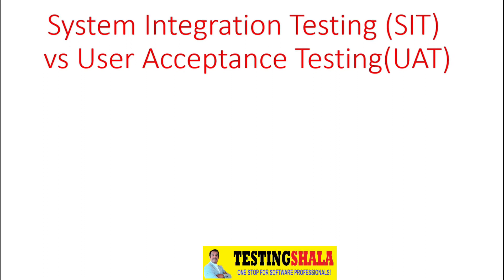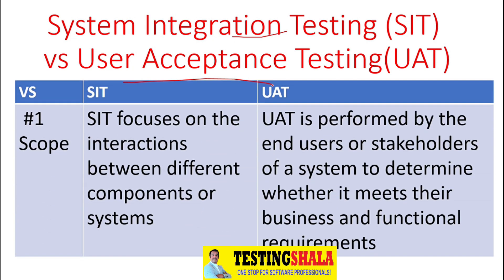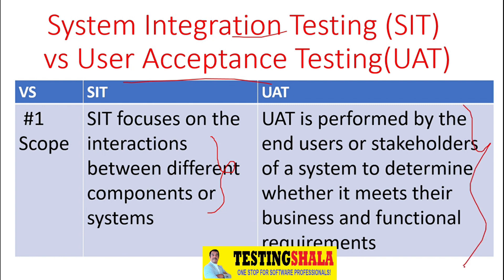Hi friends, welcome back. In this video we will learn about the key differences between System Integration Testing (SIT) and User Acceptance Testing (UAT). The most important difference is in terms of scope or objectives. SIT's main objective is to focus on the interaction between two different components or systems, whereas UAT is normally performed by stakeholders to determine whether the system meets business and functional requirements.